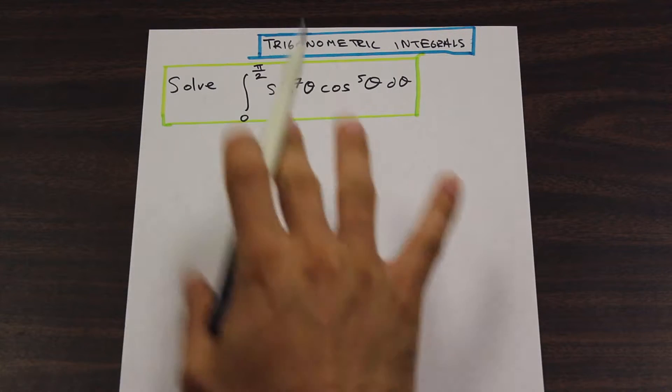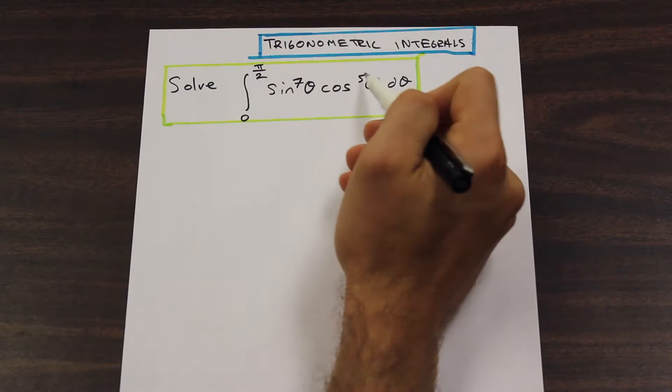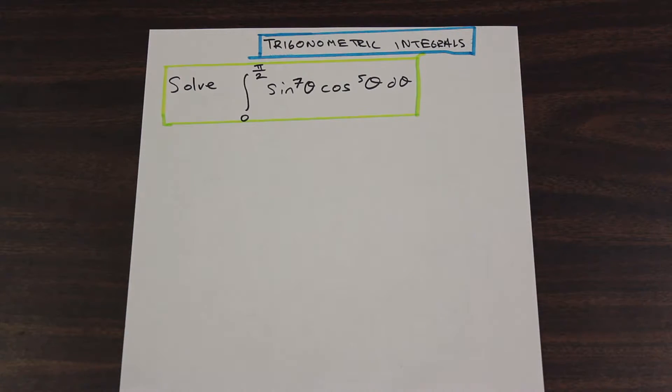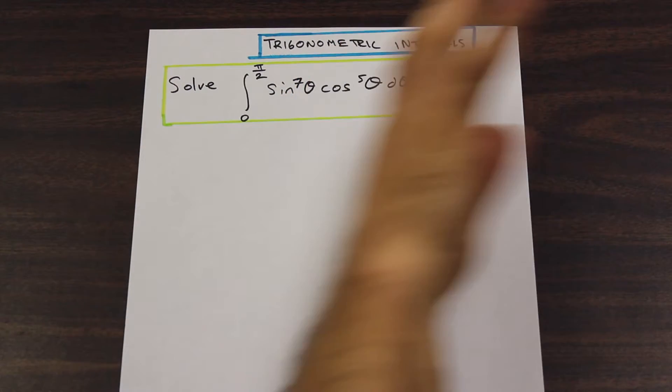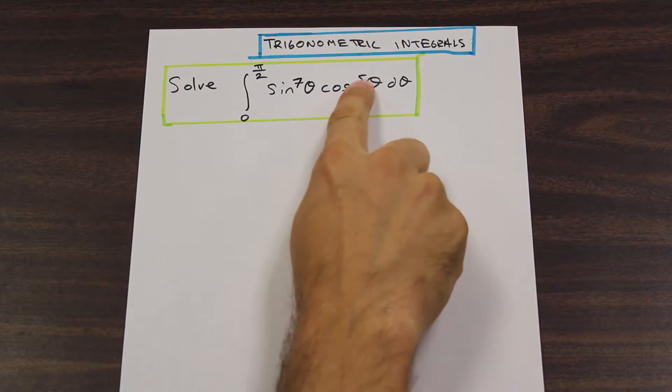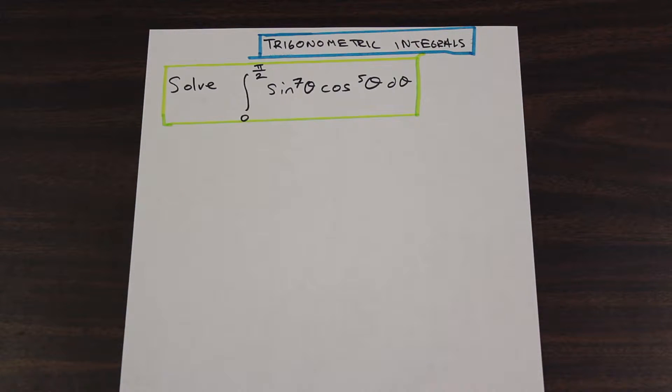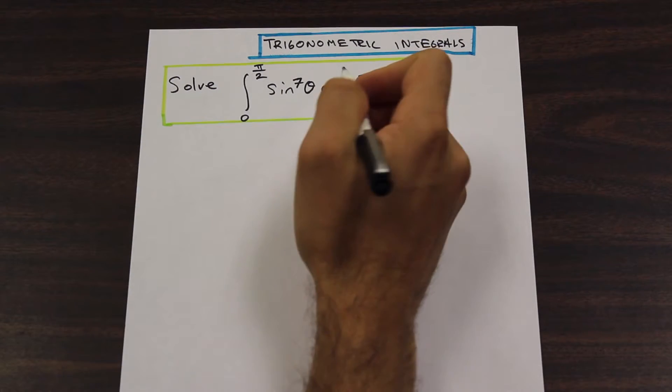In this particular case, we have cosine with an odd power. We have cosine to the 5th power. So the strategy when we have a cosine to the 5th power is to take a cosine out of that. So we're going to remove a cosine. It's going to be cosine 4th theta cosine theta. And then we're going to take that cosine 4th theta, and we're going to use the identity 1 minus sine theta. We're going to plug that in.